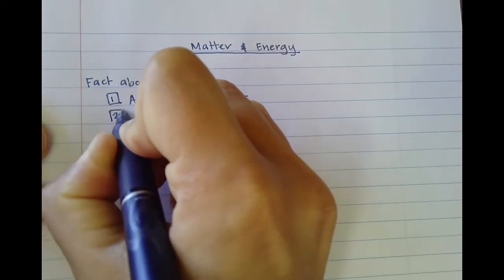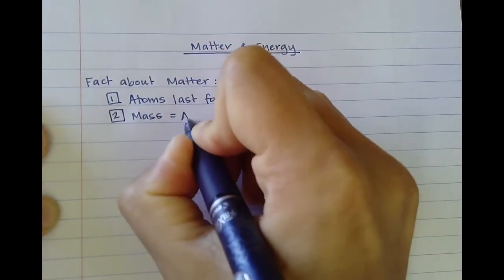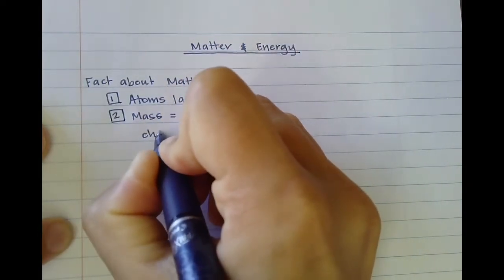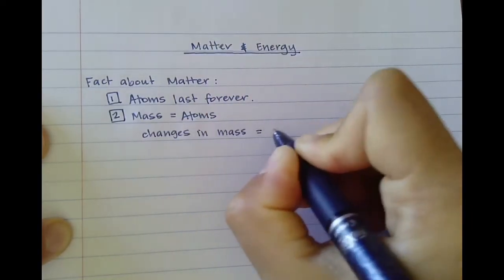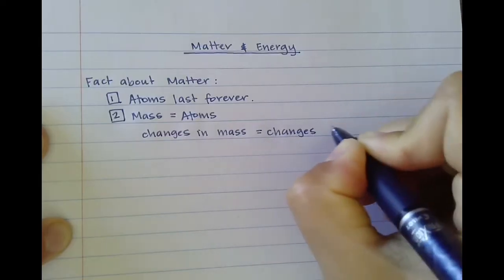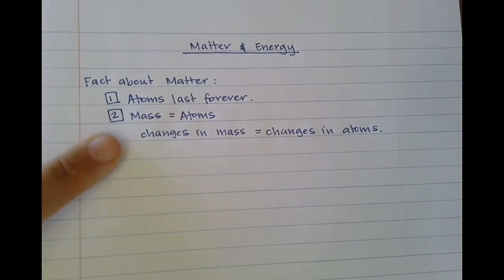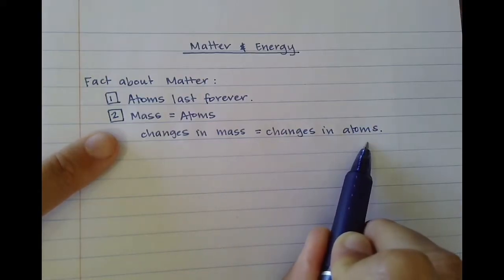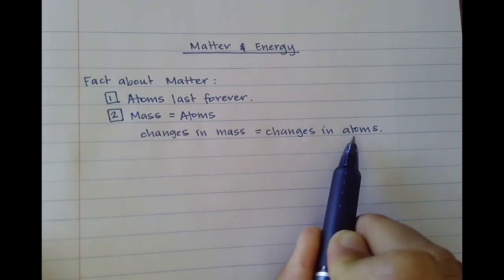The second fact is that mass is made of atoms. What this means is that changes in mass tell us about changes in atoms. On Earth, mass and weight can be thought of as the same thing. So if the mass or weight increases, that means there are more atoms, and if the mass decreases, that means there are fewer atoms.